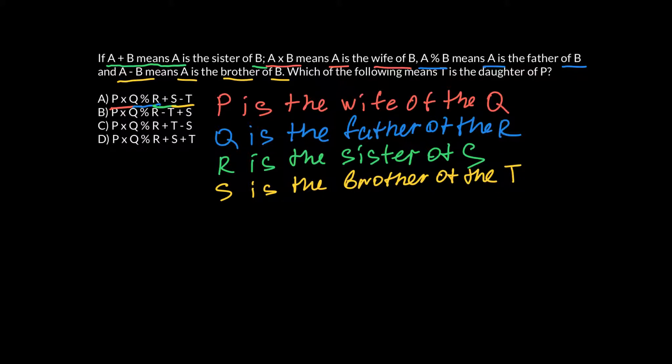Now we can build a pedigree of this family. So we have P is the wife of the Q. So P have to be female. So let's put P here. And she is the wife of the Q. So her husband is the Q. Next, Q is the father of the R. So both of them have to be parents of R. So we put R here.